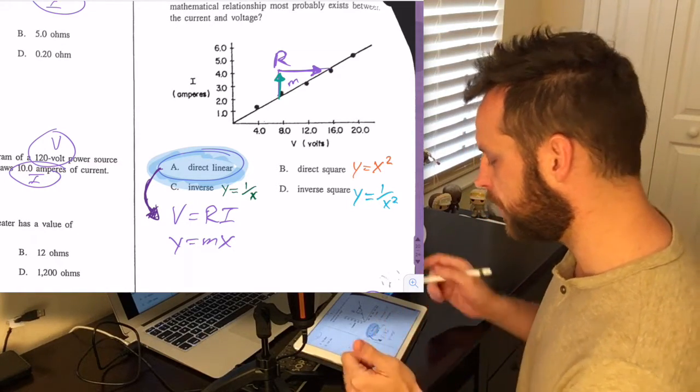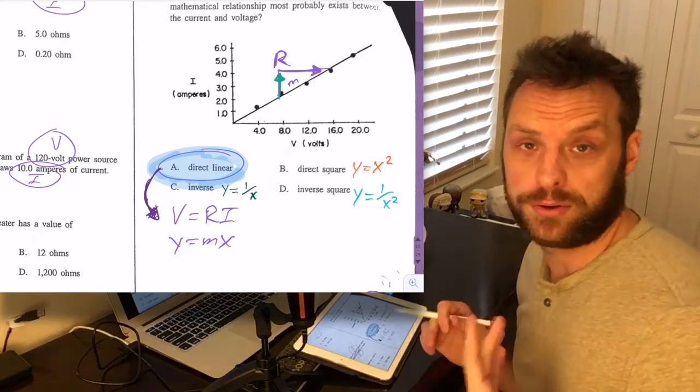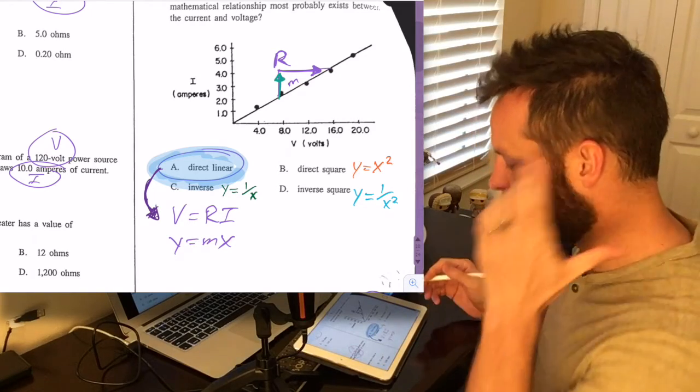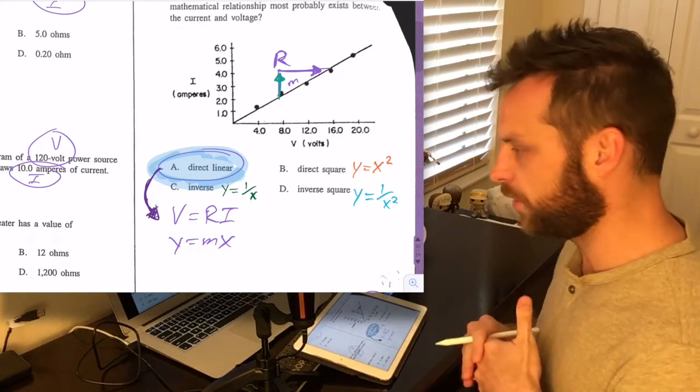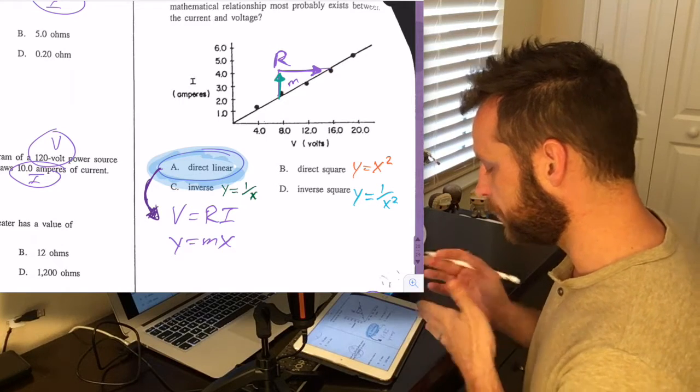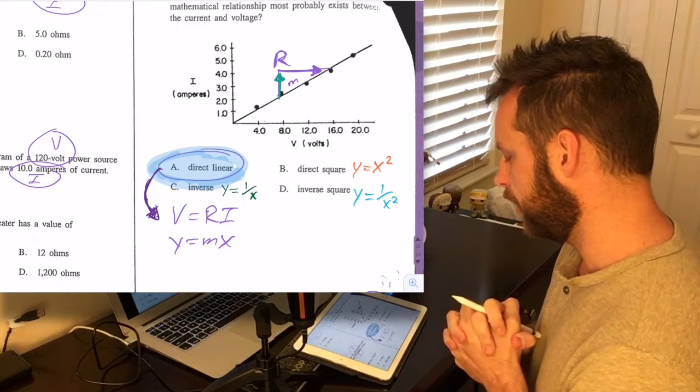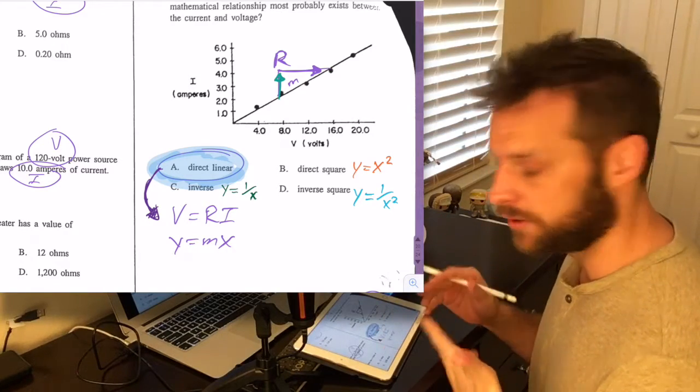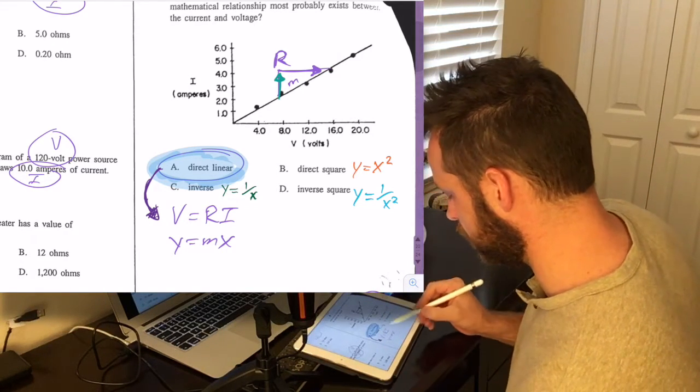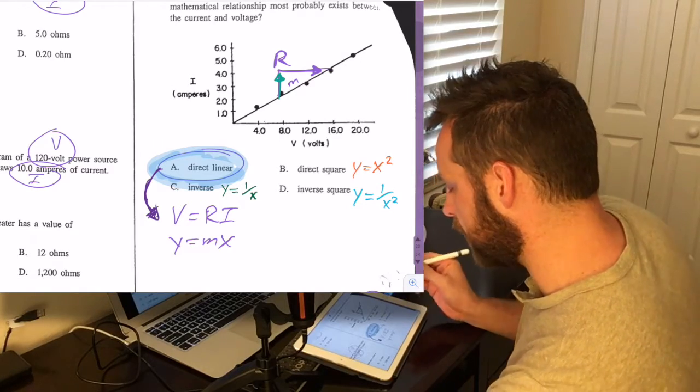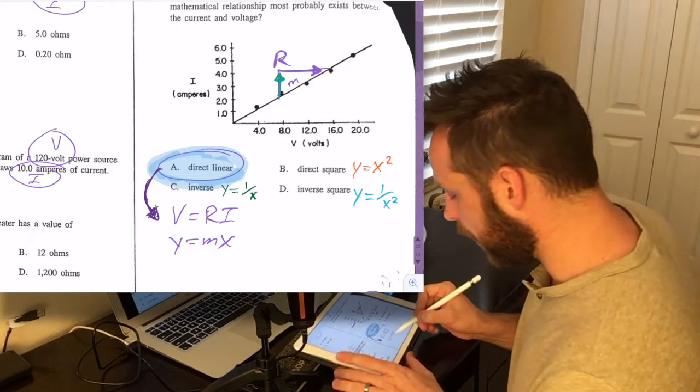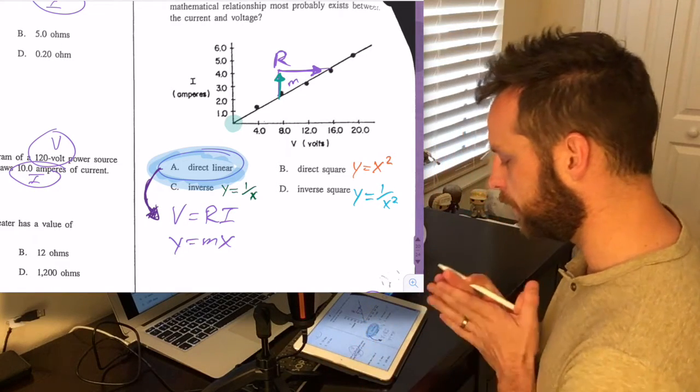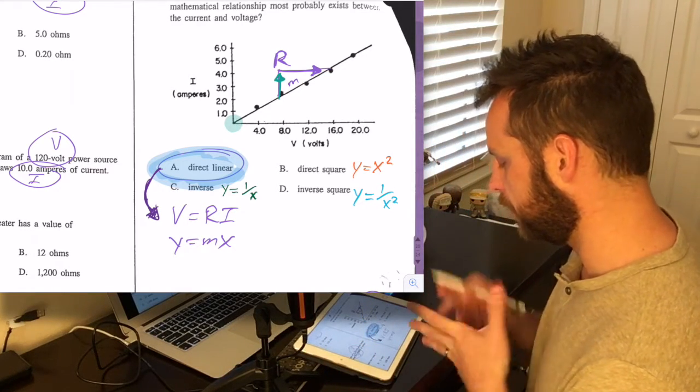But direct linear is what we're going to be seeing. And you can actually just, if you know math, you don't even need to know physics here, because you can see the graph and it's got a straight line going up and to the right. So it's got a positive constant slope. And so an inverse relationship would have a negative slope, and then the squares would have curved lines. And so we're going to see that this answer should be A, direct linear. And that would look like Y equals MX plus B, but B is hitting the zero there, the Y intercept is zero, so you don't need to write it.